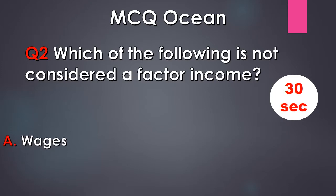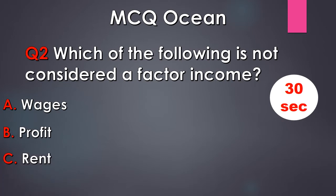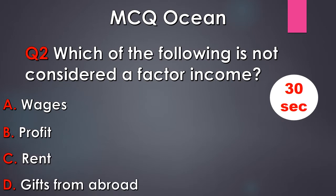Question number 2. Which of the following is not considered a factor income? A. Wages, B. Profit, C. Rent, D. Gifts from abroad. Your time starts now.